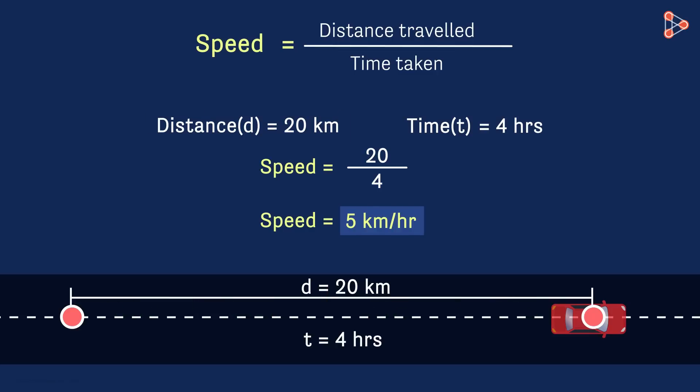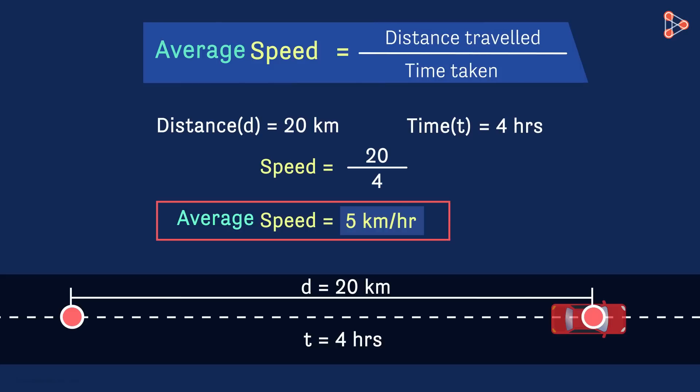So if this is not a constant speed, then what is the speed called? This speed is called average speed. Average speed is defined as the total distance covered by an object over the total time taken.